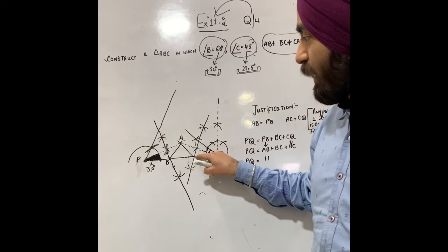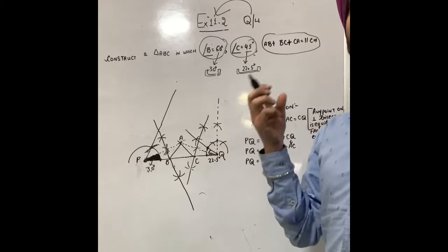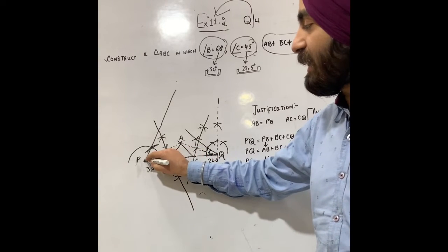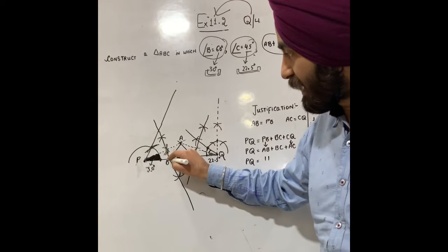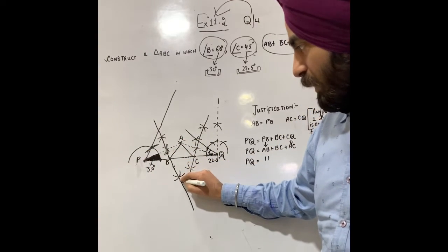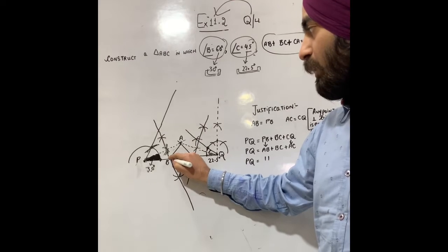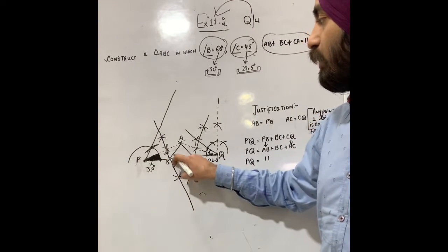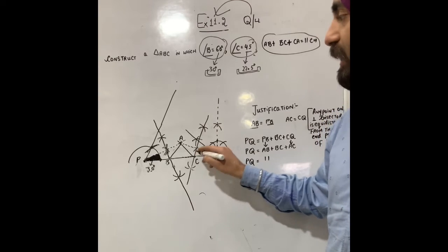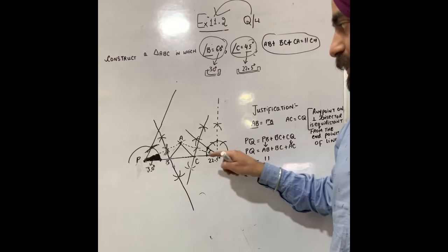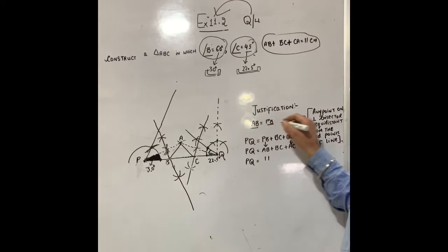Similarly, we construct the perpendicular bisector of AQ. And remember, any point on the perpendicular bisector is equidistant from the endpoints of the line. Point B on perpendicular bisector of AP means BP equals BA. Point C on perpendicular bisector of AQ means CQ equals CA.